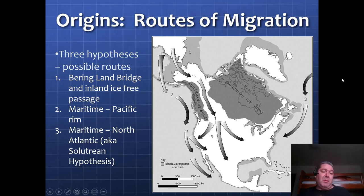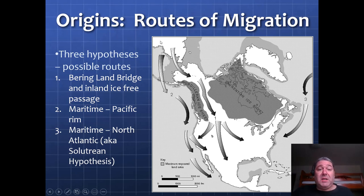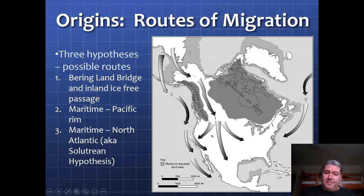There's another maritime hypothesis called the Solutrean hypothesis. We can call this the 'crazy hypothesis' — that people came 15,000 to 12,000 years ago via boats from Europe. There's not really a lot of evidence that supports that; most of the genetics have very close ties to Siberian cultures, genetic ties rather than European ties. So these first two theories are the ones we're primarily working with.